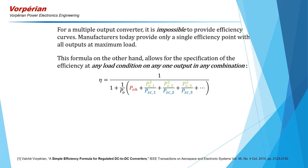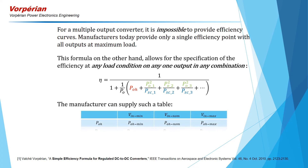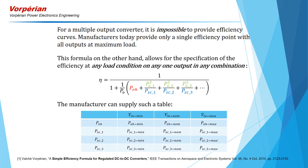Therefore, a manufacturer can supply a table in which POH, PSC1, PSC2, PSC3, etc., are specified at minimum, nominal, and maximum input voltages. This will give a complete characterization of the efficiency of the converter at any load and at any input voltage.